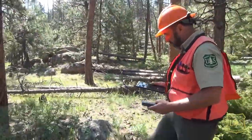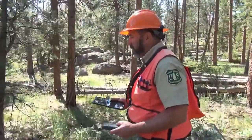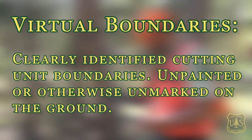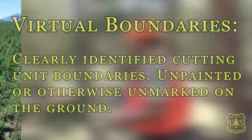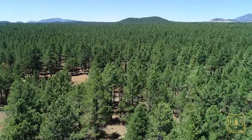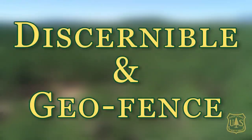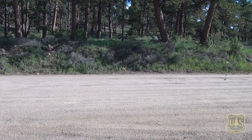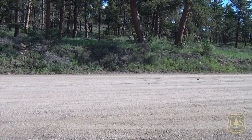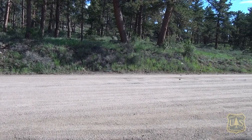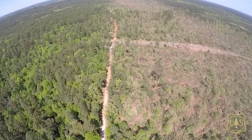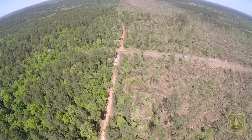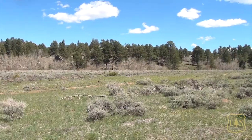This cost can be reduced by using virtual boundary designation methods. Virtual boundaries are clearly identified cutting unit boundaries that are unpainted or otherwise unmarked on the ground. There are two types of virtual boundaries: discernible and geofence. Discernible boundaries are natural or constructive features so conspicuous that they can be identified from a sale area map alone. Using these features as boundaries will not cause mistakes to be made while trees are cut. Examples of discernible boundaries are roads and distinct breaks in vegetation.